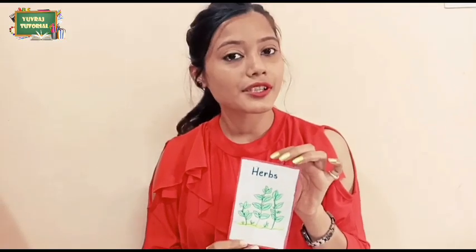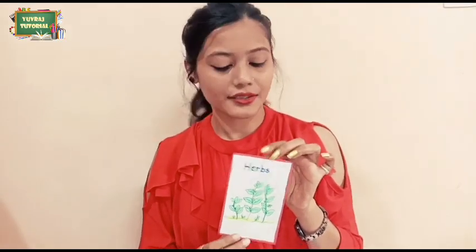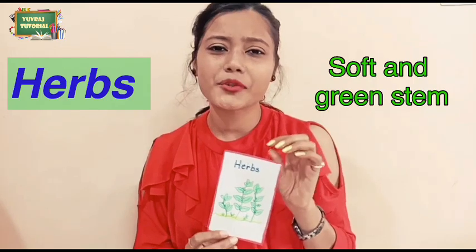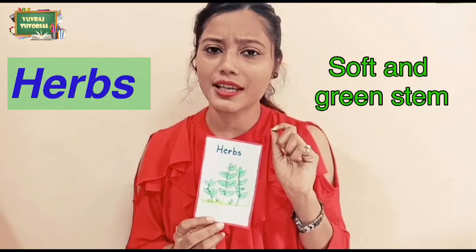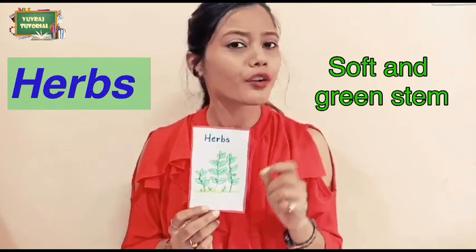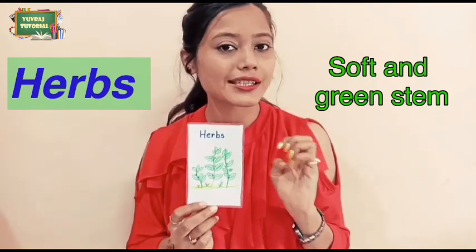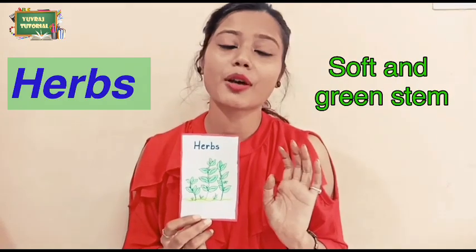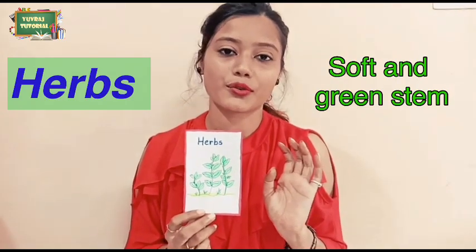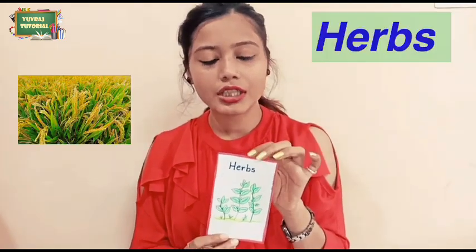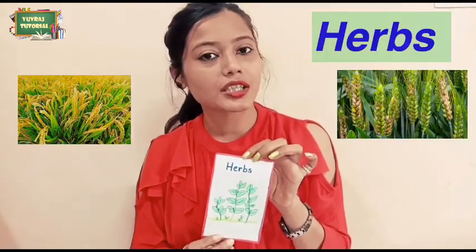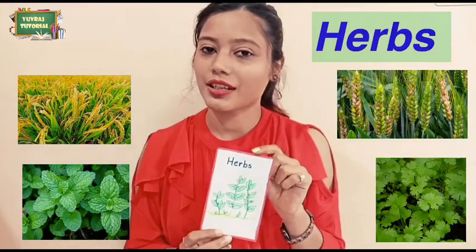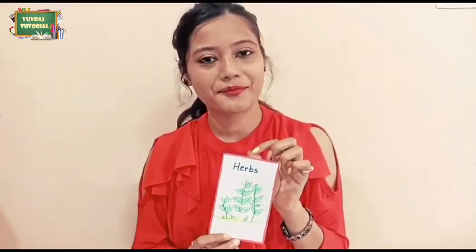The first type of plant is Herb. Herbs are short sized plants. They have soft and green stems. They can easily be uprooted from the soil. Wheat, peppermint, and coriander are some examples of herbs.